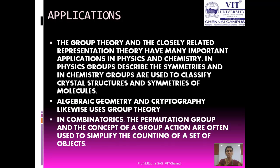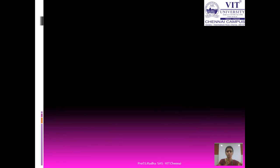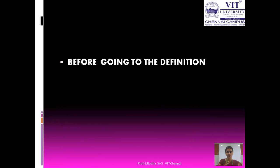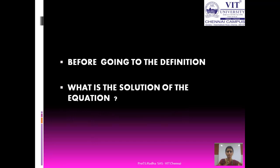In combinatorics, the permutation group and the concept of a group action are often used to simplify the counting of a set of objects. Before going to the definition of group theory, let us see what is the solution of the equation a star x is equal to b.